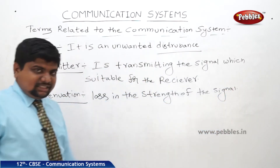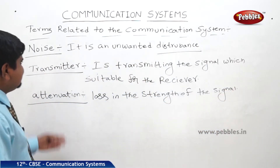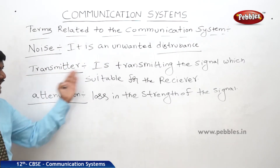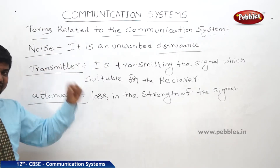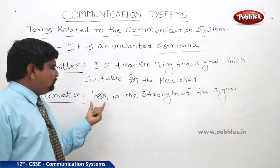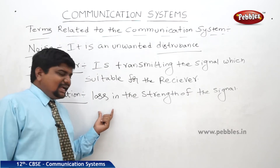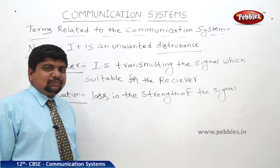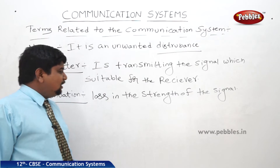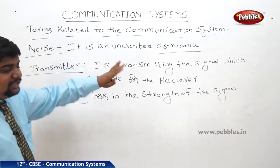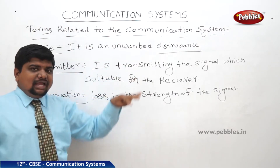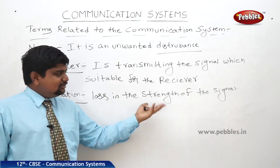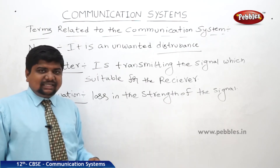Why does the loss occur? What is the reason? When the noises are removed to transmit the signal to the receiver, there may be a possibility — accidentally or incidentally — for a loss in the strength. This process is called attenuation. This attenuation will be covered with amplification; otherwise the strength won't be received by the receiver.